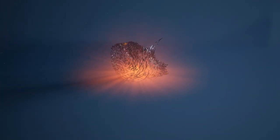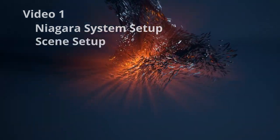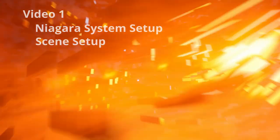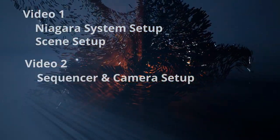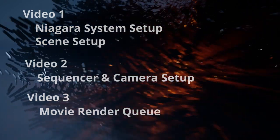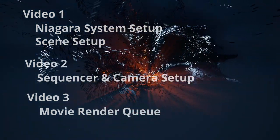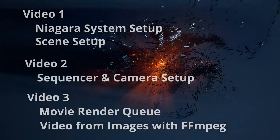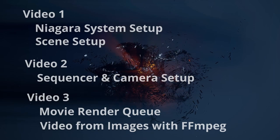Ahoy! In this video series I will show you how to set up this particle system and how to set up the whole scene with the fog and so on. Then I will show you how to create this short movie clip in Sequencer and how to render it with MovieRenderQueue. And in the end I will show you how to create a video out of the images that were created with MovieRenderQueue.